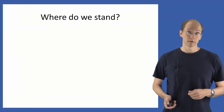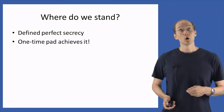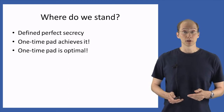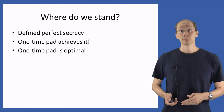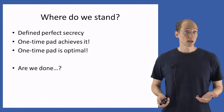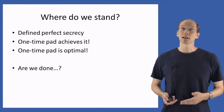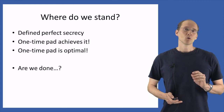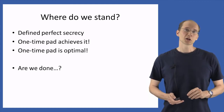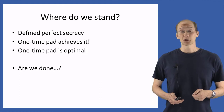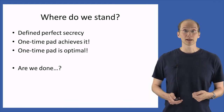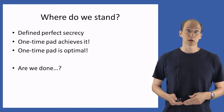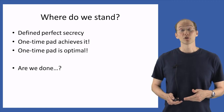So where do things stand? We've defined perfect secrecy, shown that the one-time pad achieves it, and just shown that the one-time pad is optimal at least as far as its key length is concerned. Does this mean we're done? We're not done at all — things are just starting to get interesting. What we'd like to do is relax the definition of perfect secrecy and obtain a definition which is still meaningful and useful in practice, but allows us to circumvent these inherent drawbacks of perfect secrecy that we've discussed in this lecture. This is what will occupy us for the next few lectures.